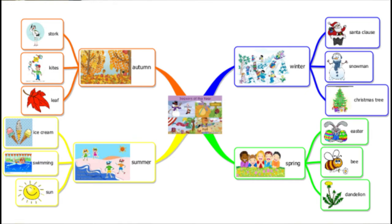In the seasons mind map, we can use different color codes. When you use different colors, it helps your brain register and remember the information more easily. There are 4 seasons: Summer, Winter, Autumn, and Spring.